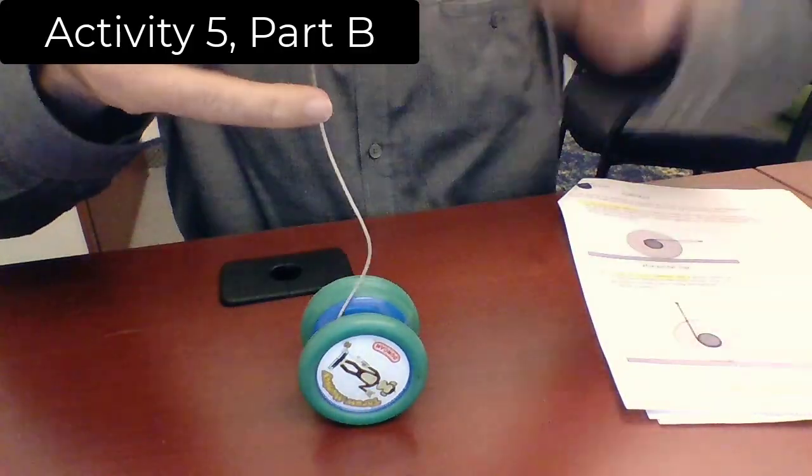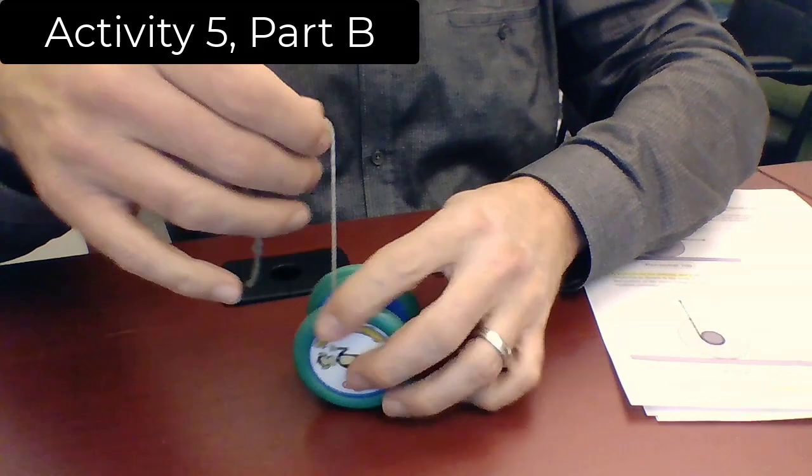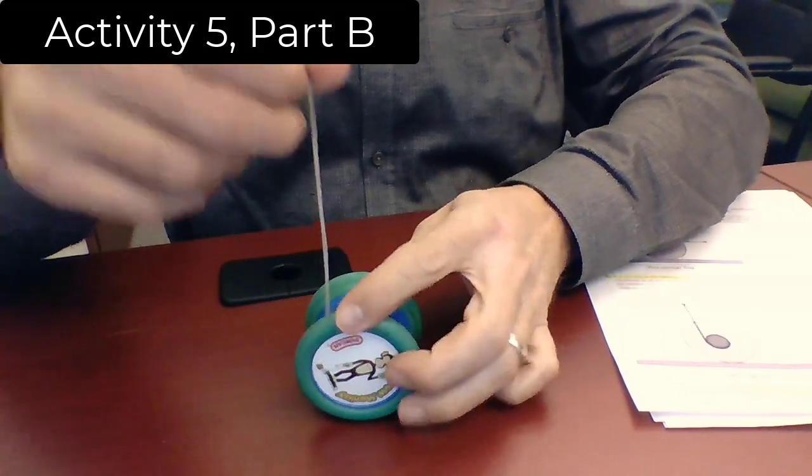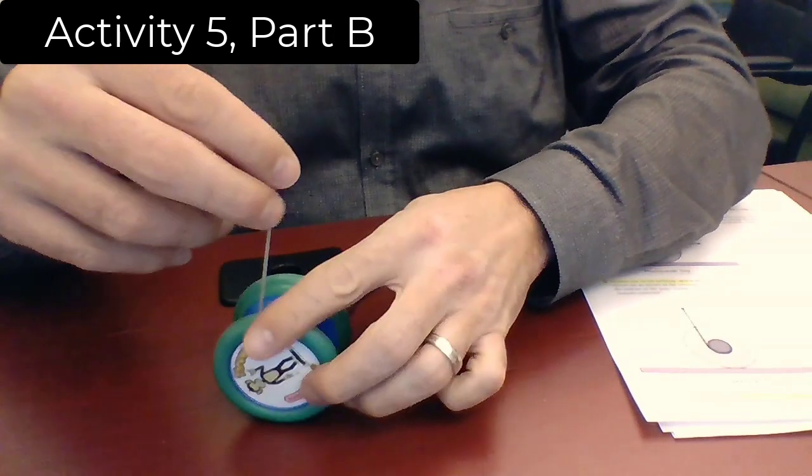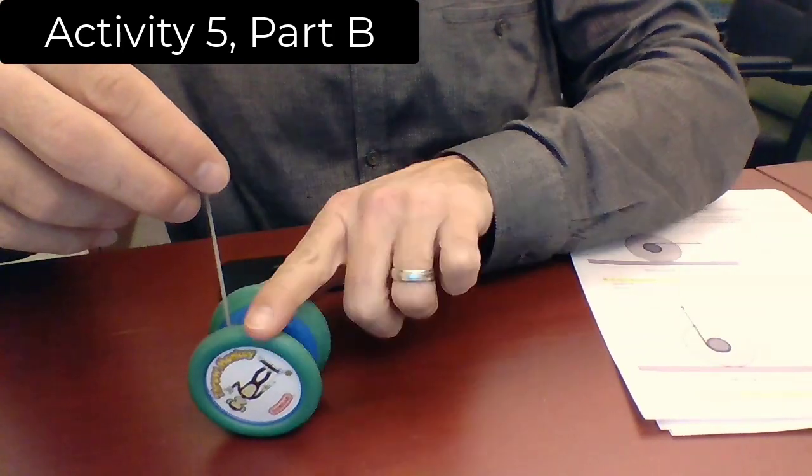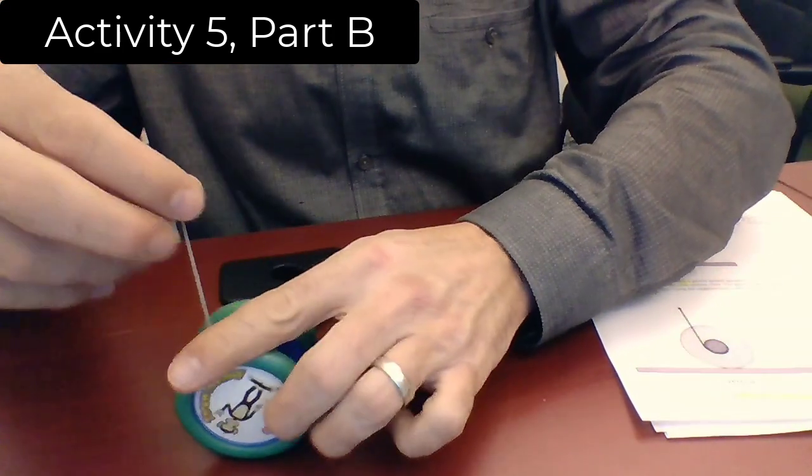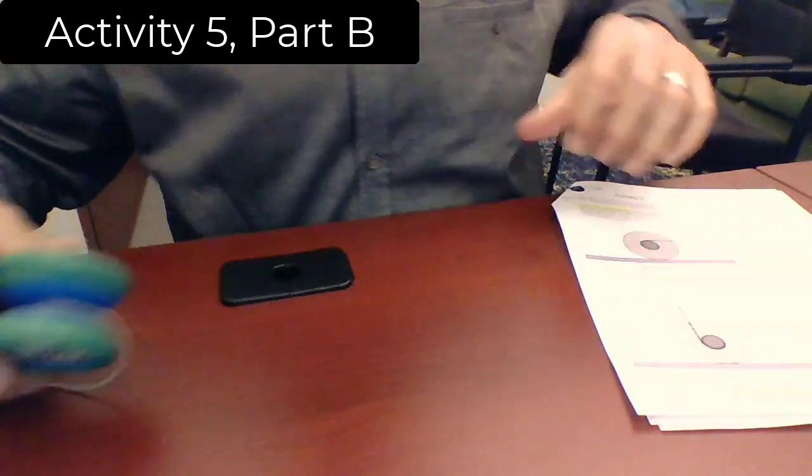Next, Part B. I'm going to pull it upwards. It's on the left-hand side, rolled around the left-hand side. I'm going to gently pull it upwards. Watch which way, clockwise or counter-clockwise, the yo-yo rotates. Do that again. Pulling up goes that way.